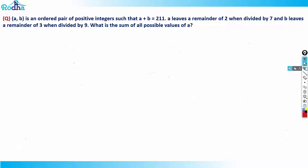Let's look at this question — a very good and tricky one for numbers. It says that (a, b) is an ordered pair of positive integers such that a plus b equals 211, a leaves a remainder of 2 when divided by 7, and b leaves a remainder of 3 when divided by 9. What is the sum of all possible values of a?